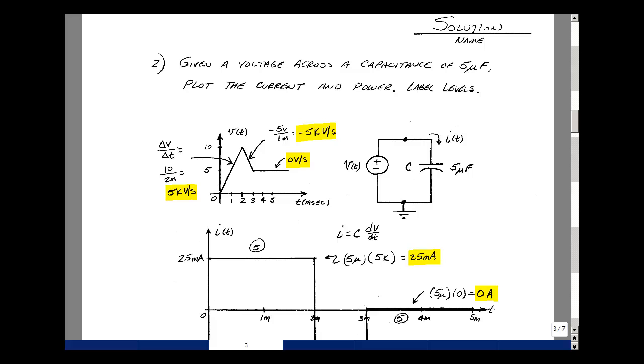Problem number two gave you a graph of the voltage across the capacitor versus time and asked if you could calculate the current in the capacitor and the power absorbed, and doing this in terms of a graph, and to also label any levels that you have, maximums and minimums. The current in the capacitor is C dV dt. So let's calculate the slope of the voltage across the capacitor.